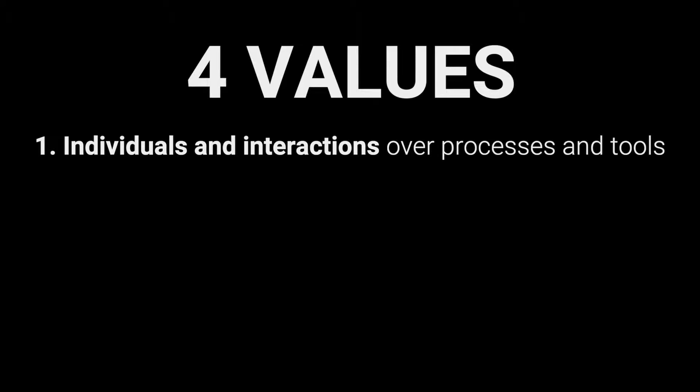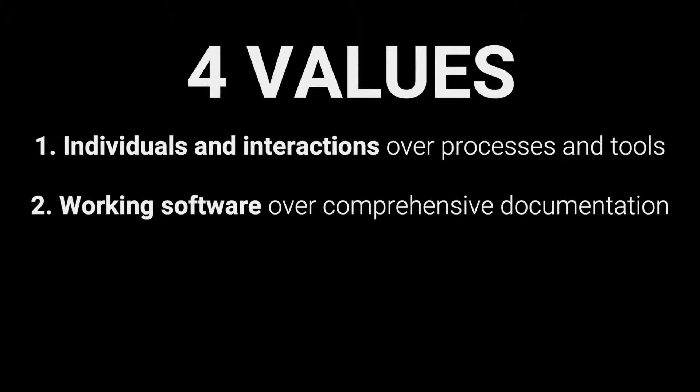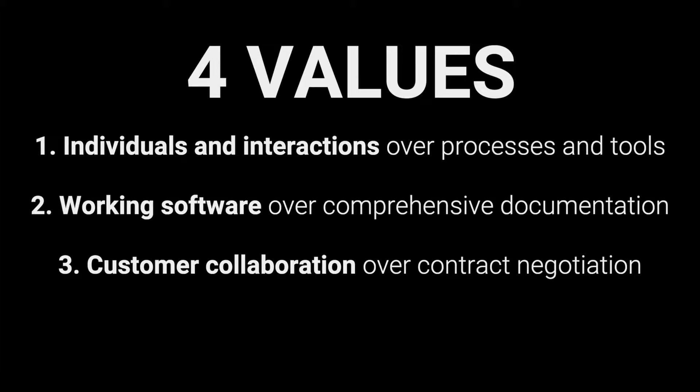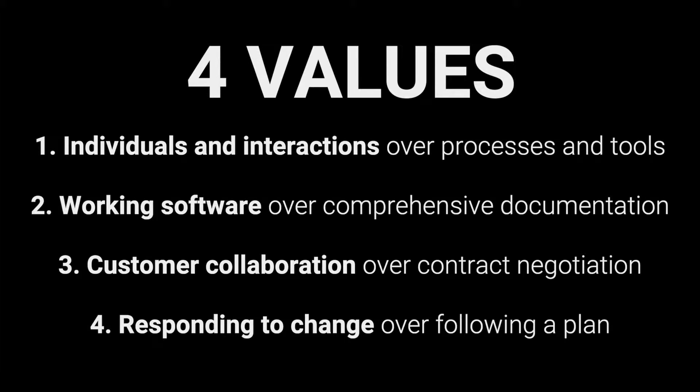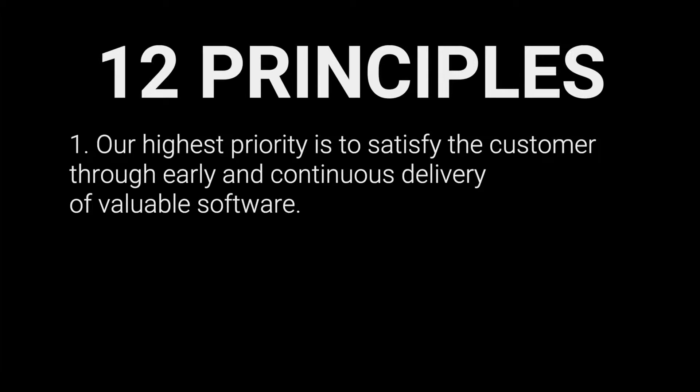I'm going to go through them one by one, but you don't need to remember all of this — I just want you to get a gist of what the Agile Manifesto is about. The four values are: individuals and interactions over processes and tools; working software over comprehensive documentation; customer collaboration over contract negotiation; and responding to change over following a plan.